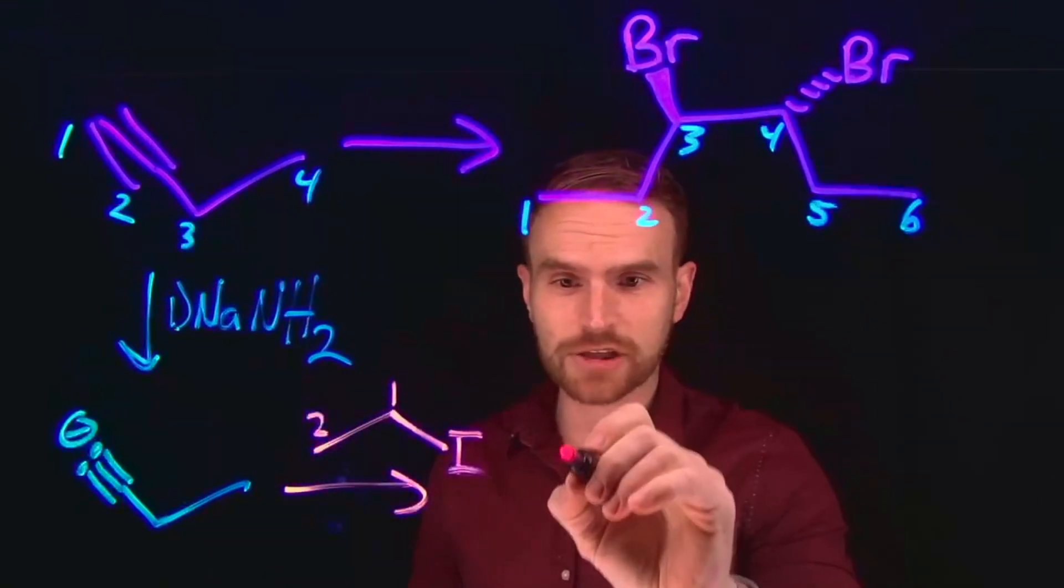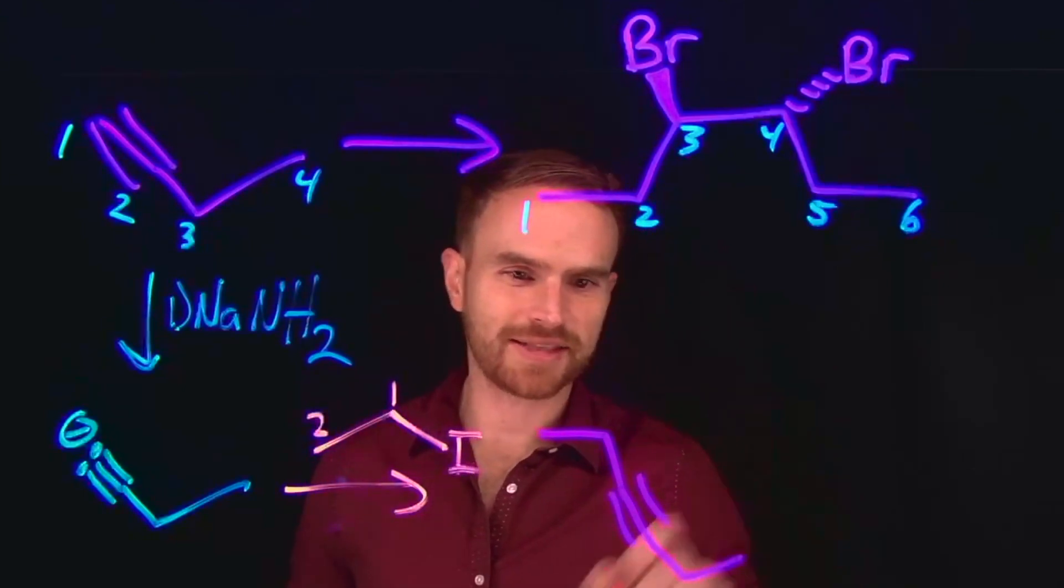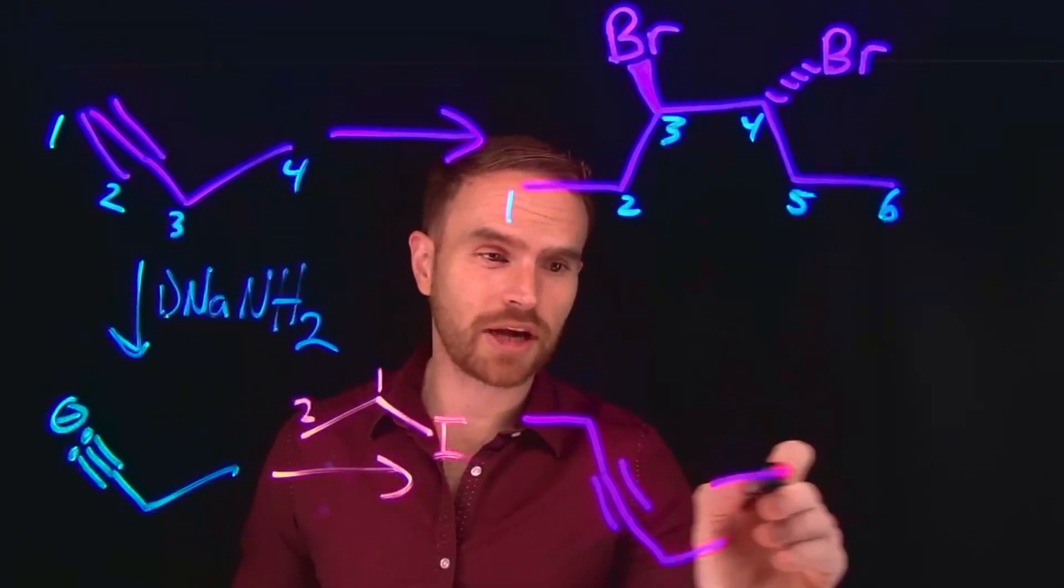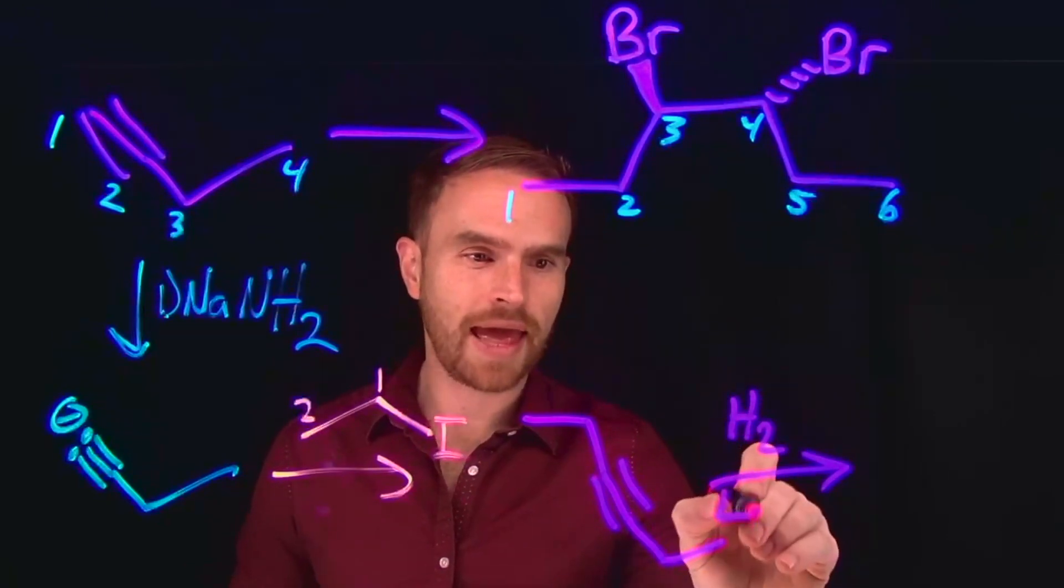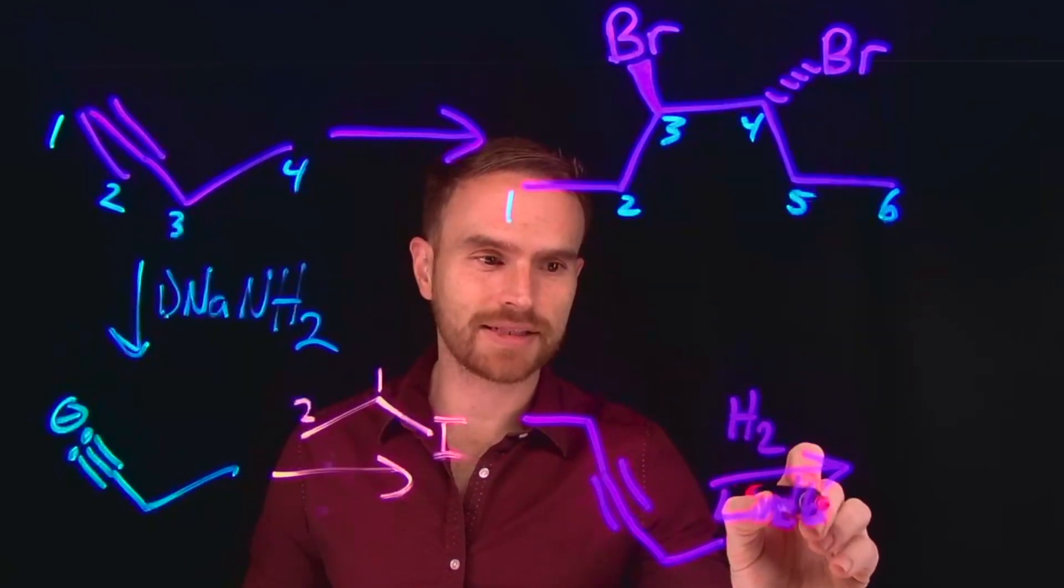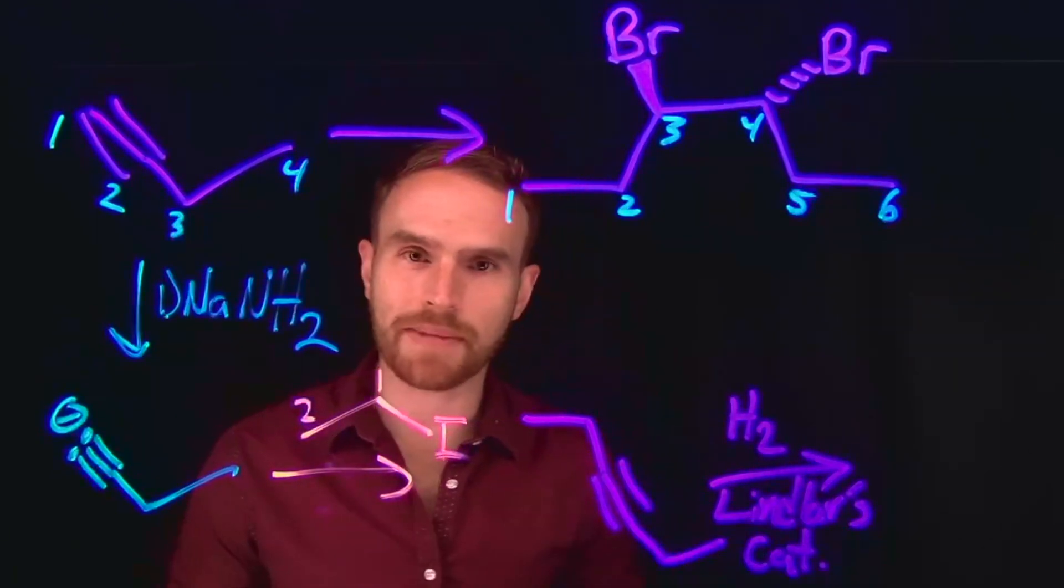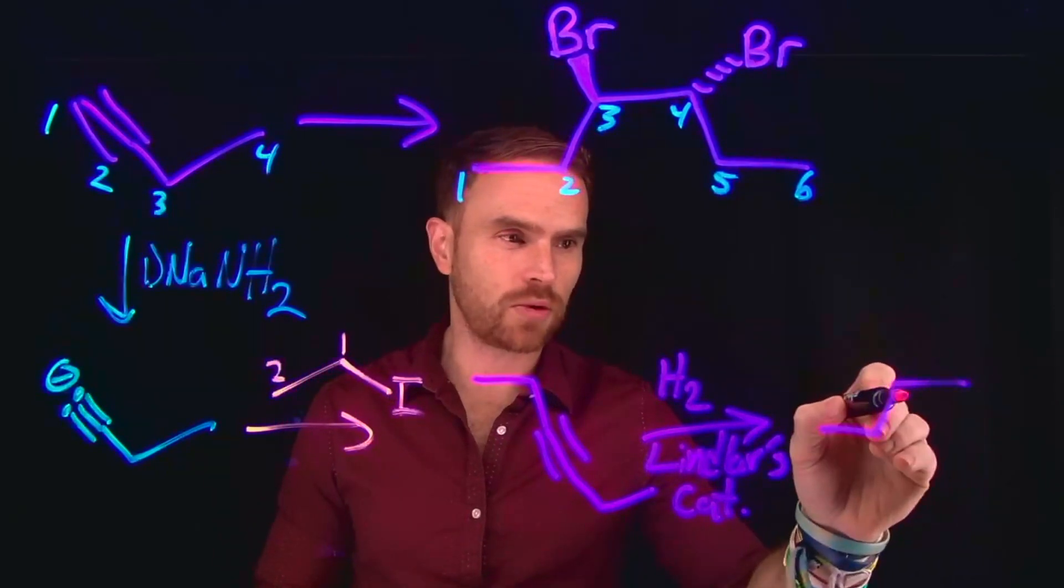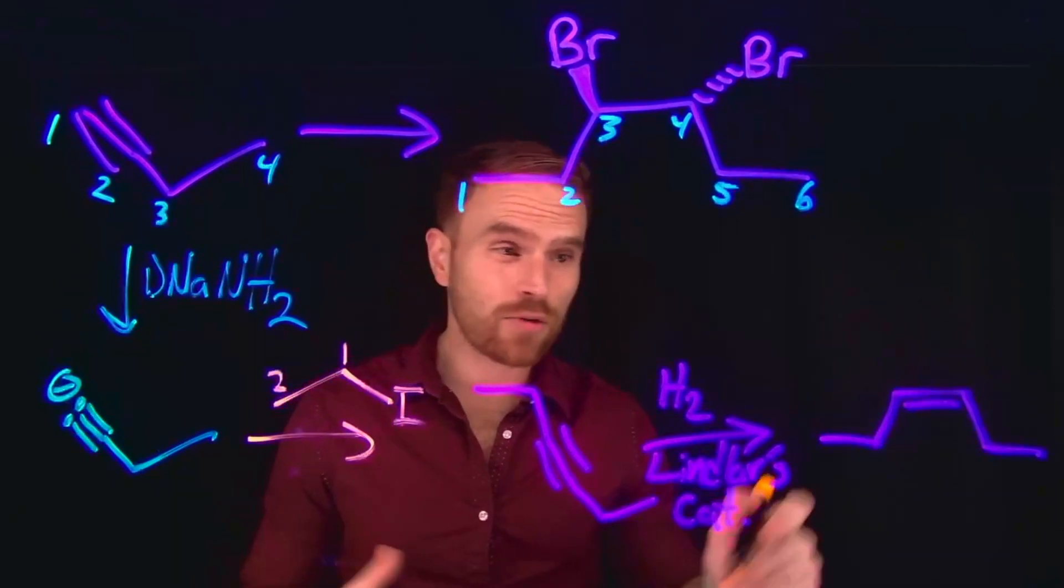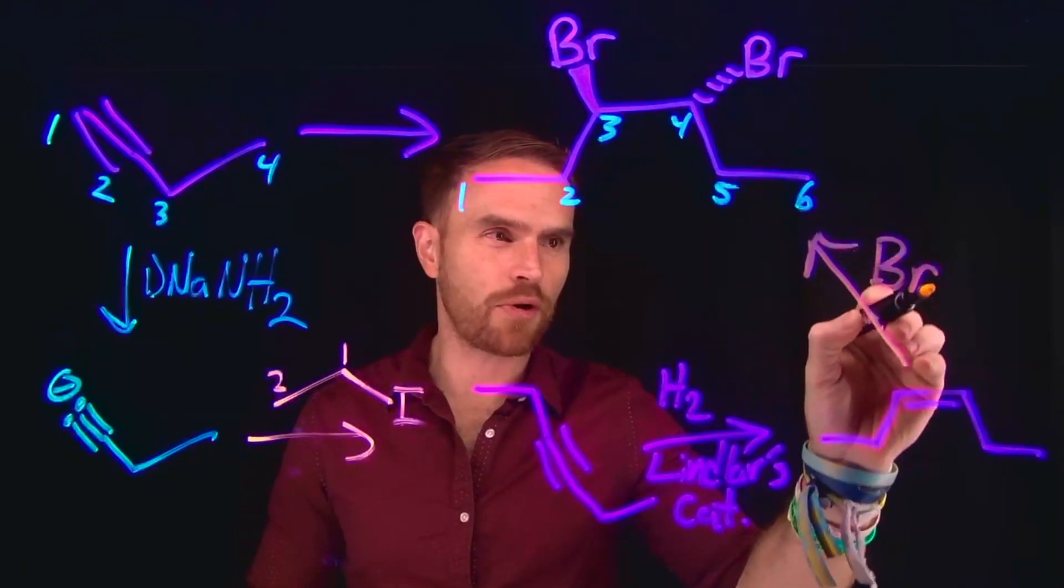So the product of that transformation is going to be an alkyne, where now we look just like this. And from here, we can do that reduction of an alkyne to an alkene using hydrogen and Lindlar's catalyst. So Lindlar's catalyst is the one that specifically allows us to make Z alkenes. And therefore, the product of this transformation is going to be that alkene.